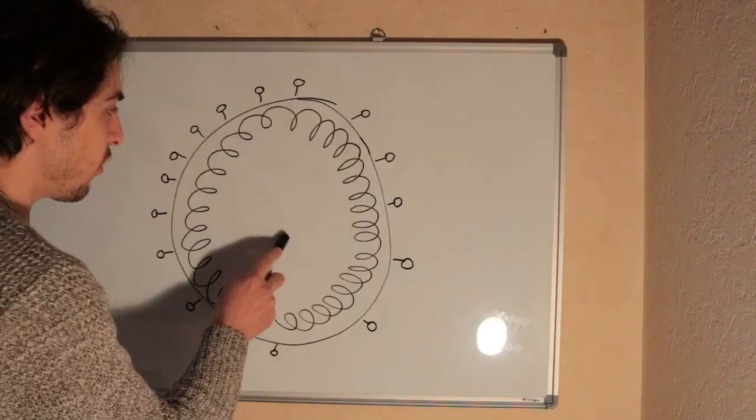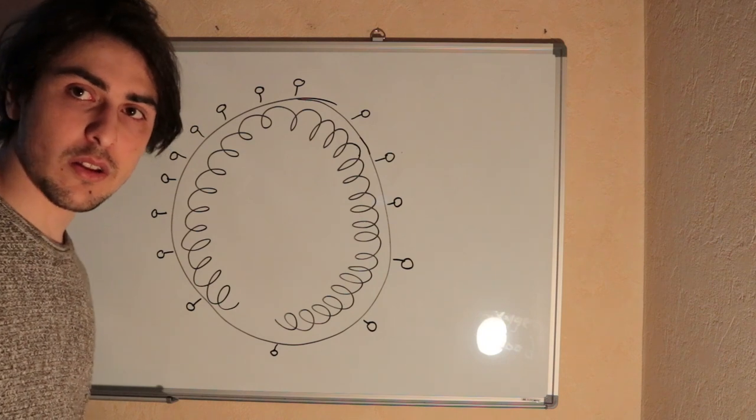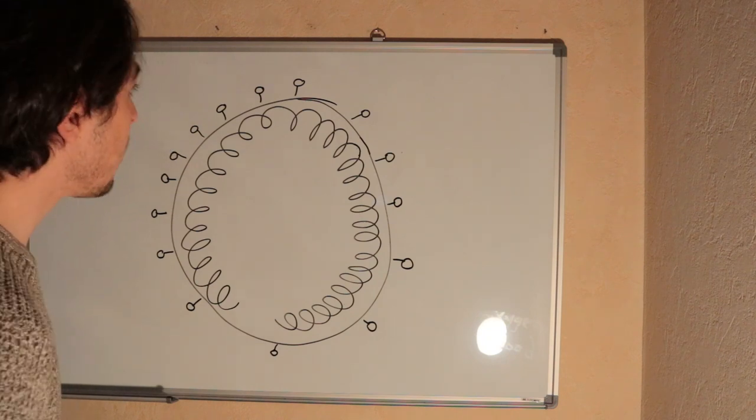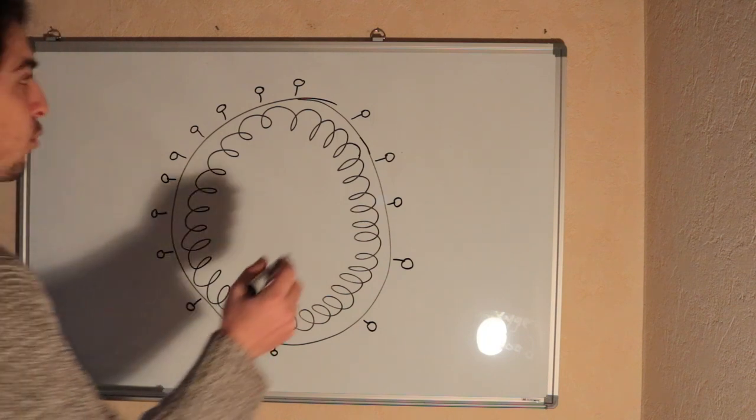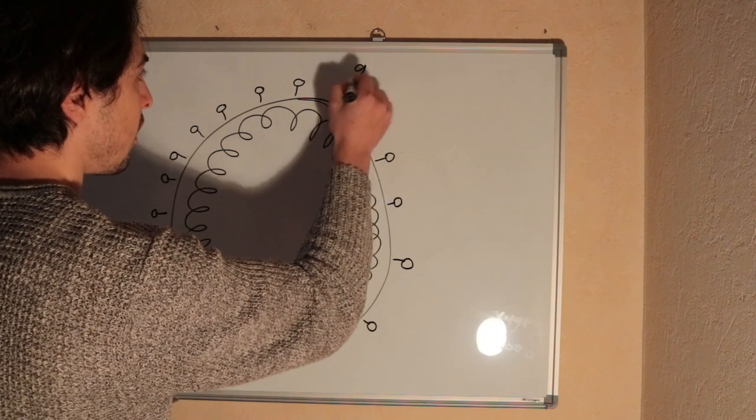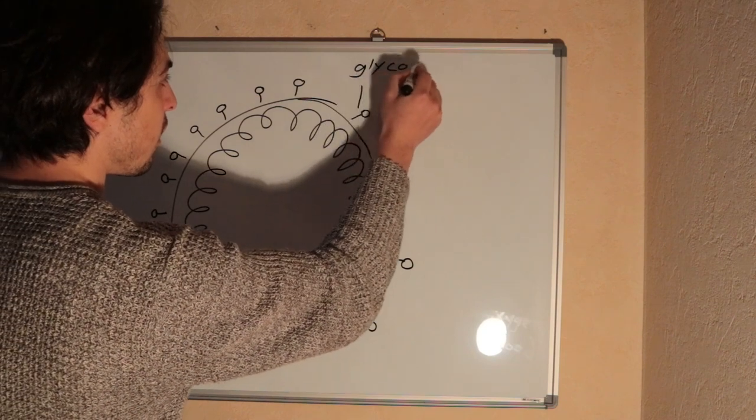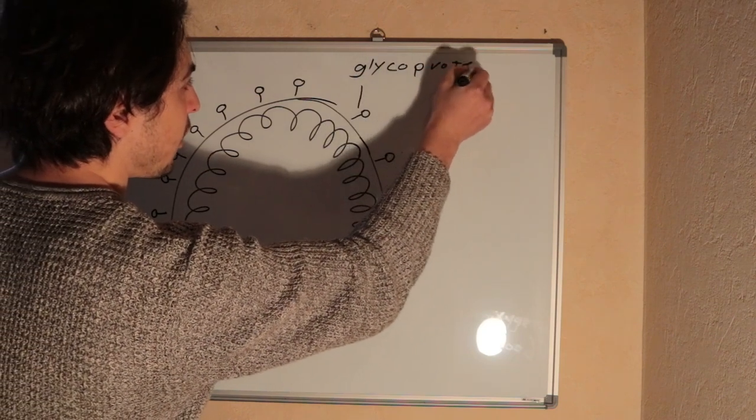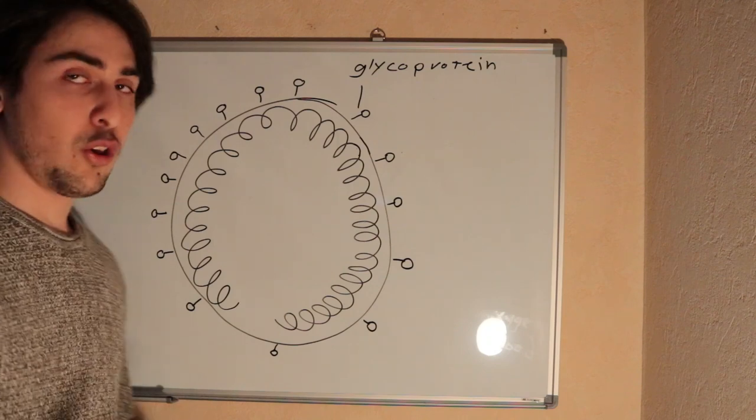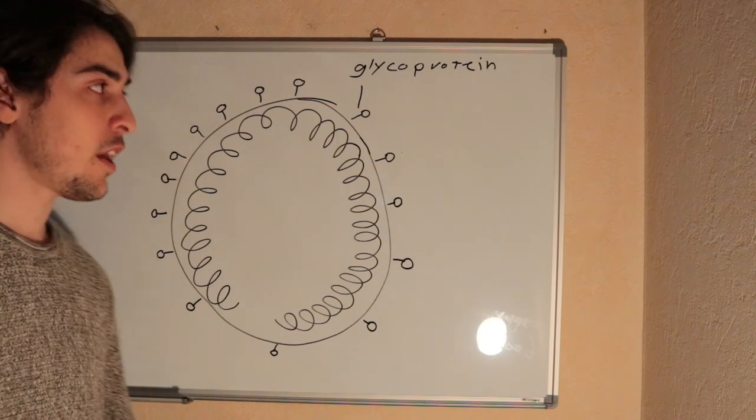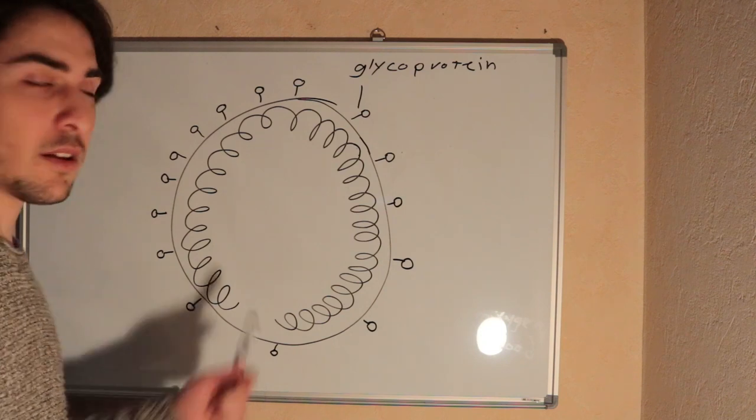So this is what the coronavirus looks like. It's a single-stranded RNA virus with a protein envelope. It has glycoproteins outside that help this virus enter human cells or animal cells and destroy them. Replicate and destroy.